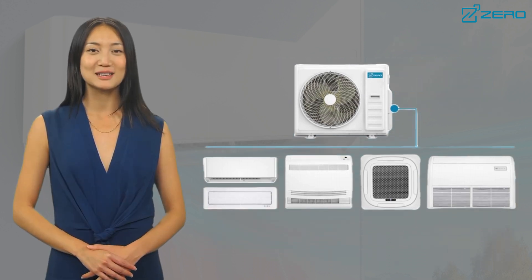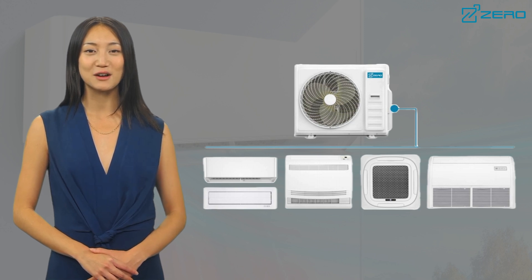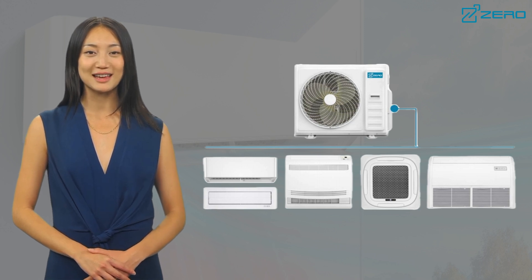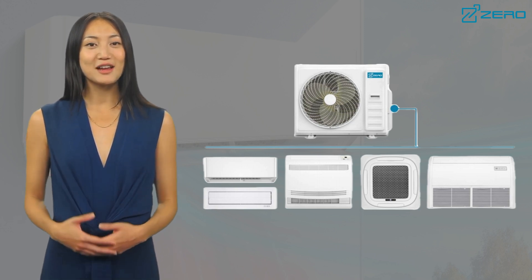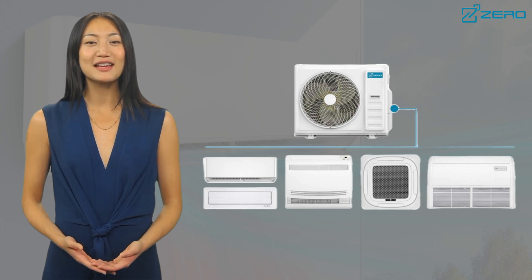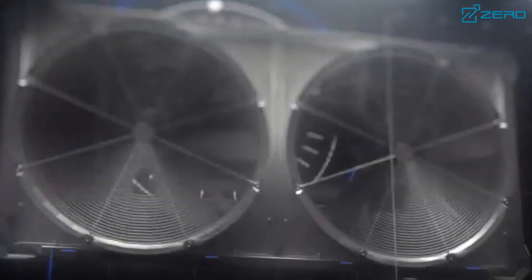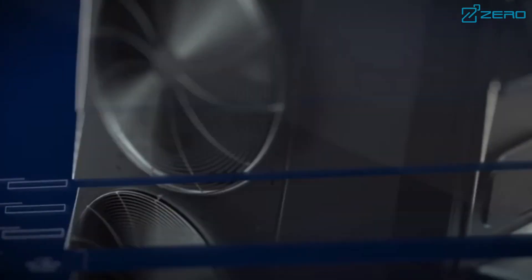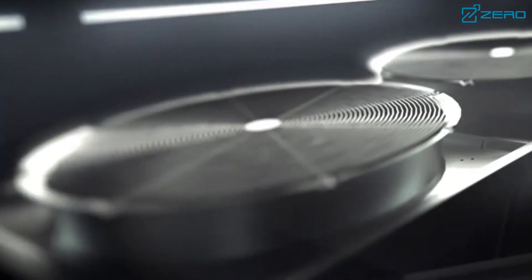In addition, the multi-split air conditioning system supports independent control of partitions, and can turn on and off the air conditioning in specific areas according to actual usage needs, greatly reducing energy consumption. Whether you need basic heating and cooling for a single room or flexible control for multiple rooms, our products can meet your needs.